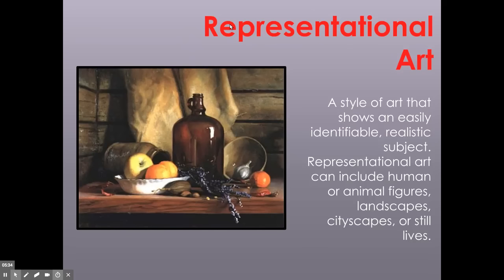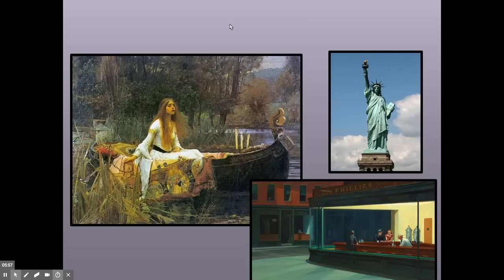Representational art — a style of art that shows an easily identifiable, realistic subject. Representational art can include human or animal figures, landscapes, cityscapes, or still lifes, such as this one. This is a still life. You guys might be very familiar with this type of artwork. We see this often — some jugs, some fruit set on a table. A still life.